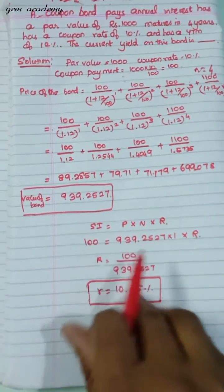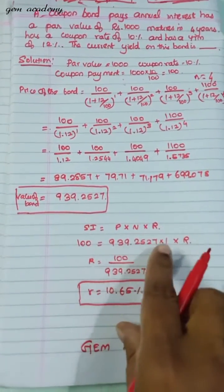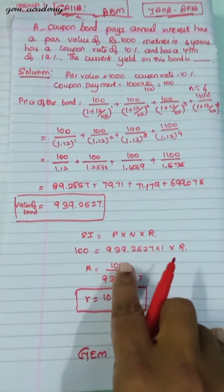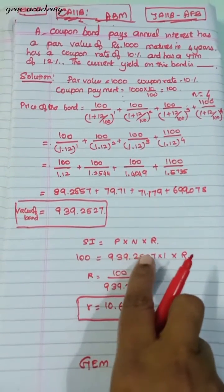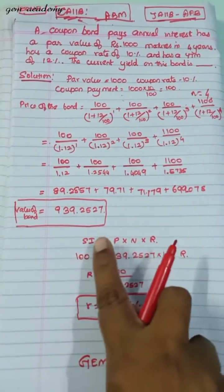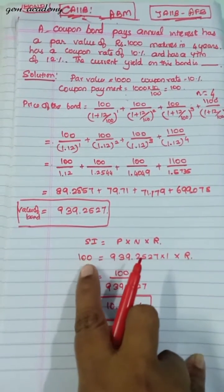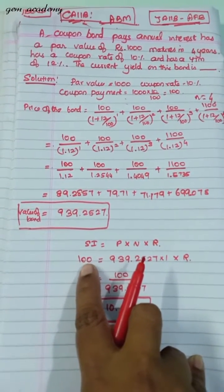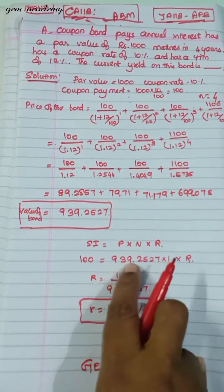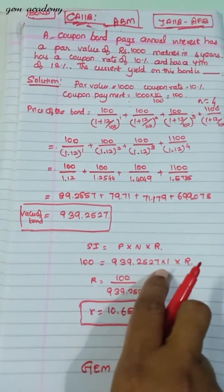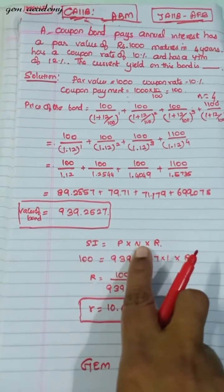And for the current yield, please refer to our previous videos for current yield problems. The formula is simple interest equals P×N×R. For simple interest I'm substituting the coupon payment and price of the bond. Price of the bond is 939.2527, and for current yield N is 1.